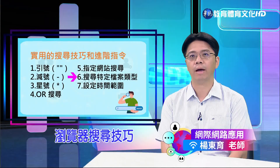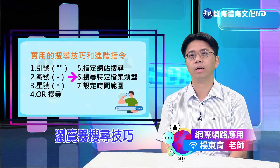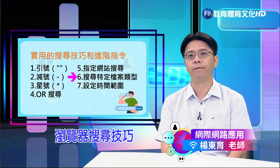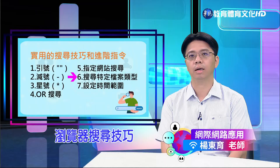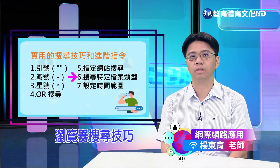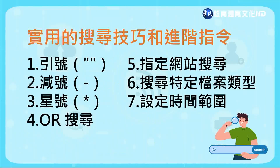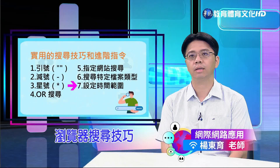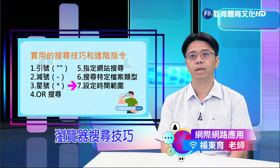第六个技巧是搜寻特定档案类型。使用 filetype: 关键字可以搜寻特定类型的档案。例如搜寻「全球暖化 filetype:PDF」，将只显示全球暖化主题的PDF格式文件，而不会显示其他格式的文件。